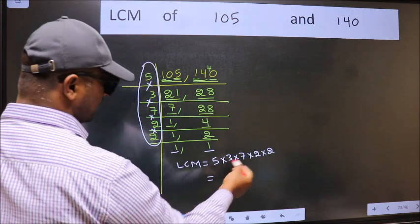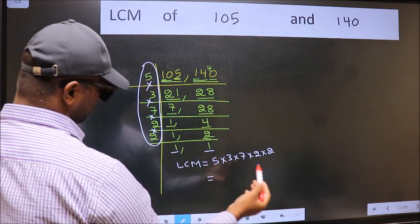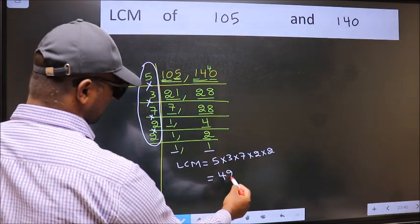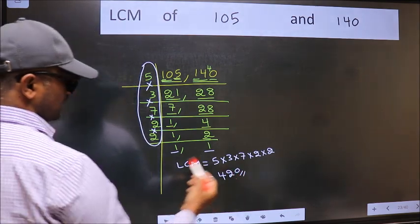When we multiply these numbers we get 420 as our LCM.